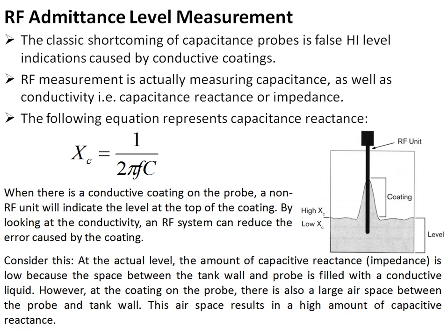To eliminate the coating-error problem, RF admittance level measurement is used. In addition to measuring capacitance, it also measures conductivity — which is inversely proportional to capacitive reactance or impedance, given by 1/(2π·f·C), where f is the operating frequency of the level sensor. A normal capacitance-based unit will indicate the level at the top of the coating because the coating increases capacitance, producing an erroneous reading. RF admittance measures impedance in addition to capacitance.